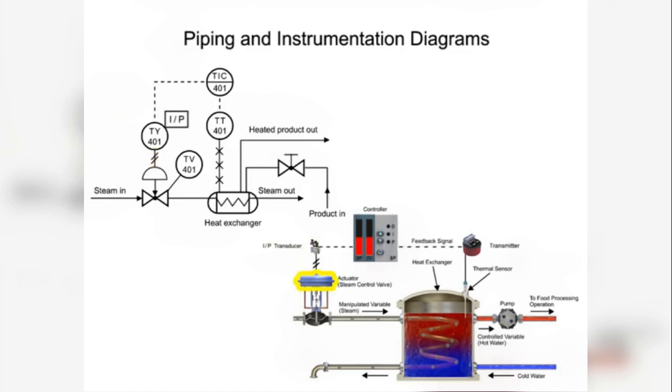The pneumatic-controlled diaphragm actuator that opens and closes the globe valve regulates steam in the process. The actuator is represented by the half-circle in the P and ID. The arrow pointing downwards from the actuator indicates a fail-closed valve type.